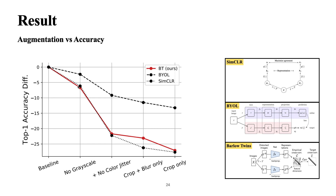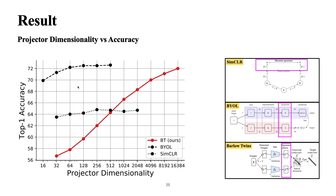Here we increase the dimensionality of the last projector layer. We can see that as we increase projector dimensionality, our model continues to learn and accuracy keeps going up. For other methods, accuracy is high at lower embedding dimensions but becomes stagnant after a certain point. For Barlow Twins, increasing dimensionality continues to improve accuracy, showing we are effectively using higher-dimensional representations.